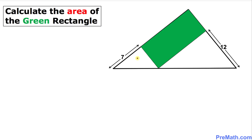Welcome to PreMath. In this video tutorial we are going to calculate the area of this green rectangle that is inscribed in this given triangle. One part of the triangle is 7 units whereas the other part on this side is 12.